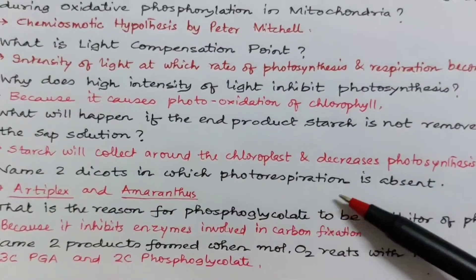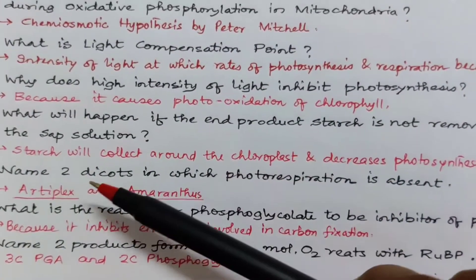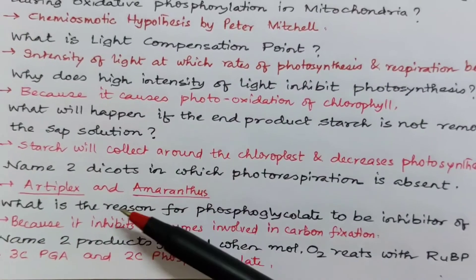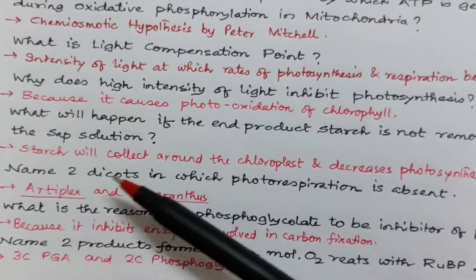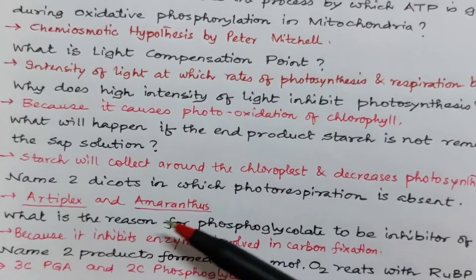Name two dicots in which photorespiration is absent. Photorespiration generally occurs in all dicots but there are two of them which are exceptions. One is Artiplex and other is Amaranthus.